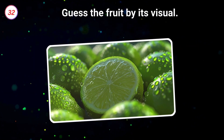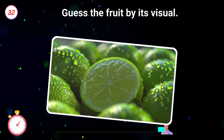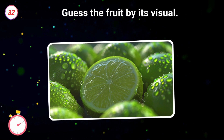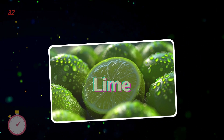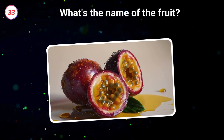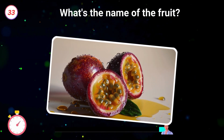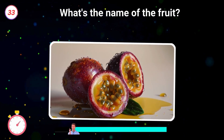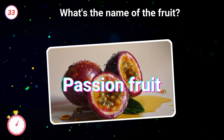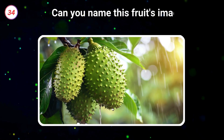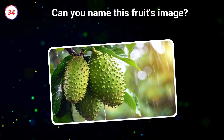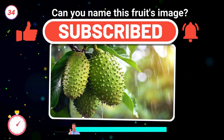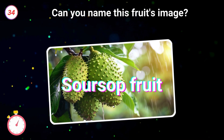32. Guess the fruit by its visual. Lime. 33. What's the name of the fruit? Passion fruit. 34. Can you name this fruit's image? Soursop.